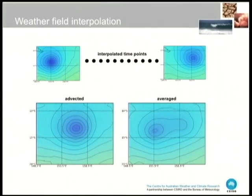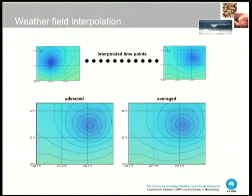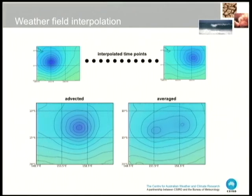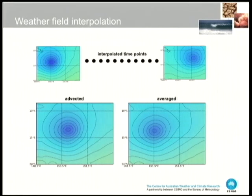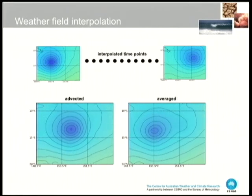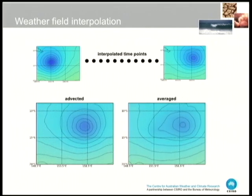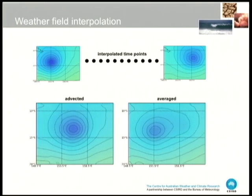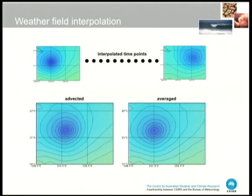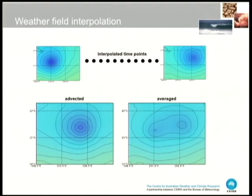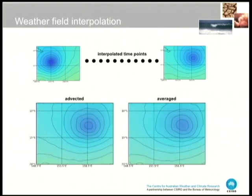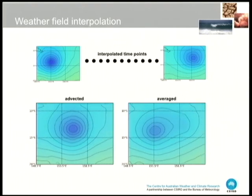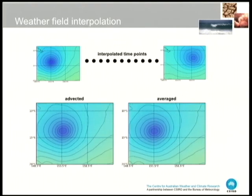This is a video to demonstrate what we're getting at. On the right you've got the weighted average example, and in the middle the interpolated time points don't look very realistic — you get two cyclones appearing, a dumbbell sort of appearance. Whereas using a morphing approach on the left, the characteristics of the cyclone are maintained. You can even see the intensification of the low as it approaches the land. Generally it's just a better approach.